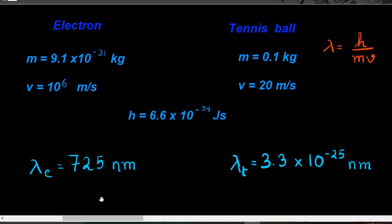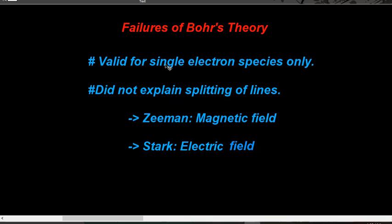It is due to the very small wavelength value of the tennis ball that we cannot observe wave character in macroscopic objects, whereas we can observe the wave character in the electron. This is the reason we cannot see wave nature in our surroundings in day-to-day life.